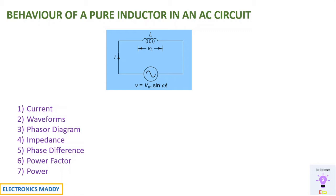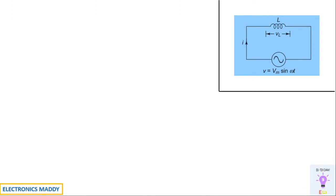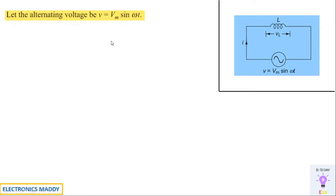Let's start with the current relationship. We are considering an inductor connected to an AC source. The source voltage has a magnitude of Vm sin ωt. Sinusoidal voltage is applied because the generation of alternating voltage is always a sine wave, as explained in a previous video — the link will be in the description. The voltage across the inductor drop is Vl and I is the current flowing through it, so let the alternating voltage be V = Vm sin ωt.